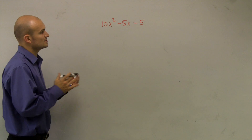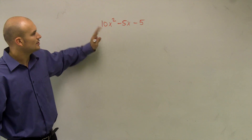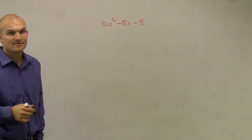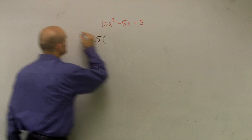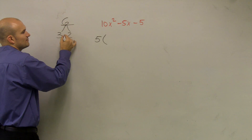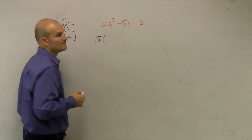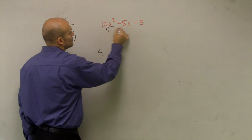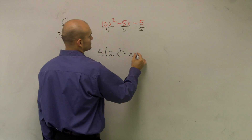When we have a trinomial, the first thing we always want to do is see what we can factor out. I notice that all of these terms share a 5. So I'm going to factor out a 5. Just like factoring a 3 out of 6 — you divide 6 by 3 to get the other factor. Dividing every term by 5 gives me 2x squared minus x minus 1.